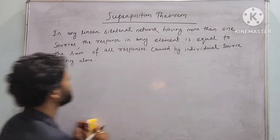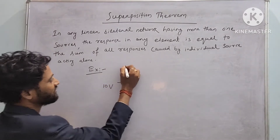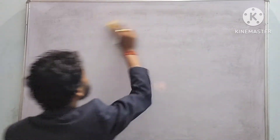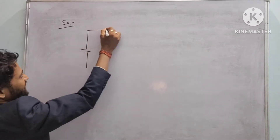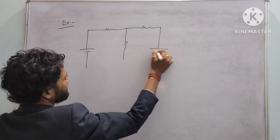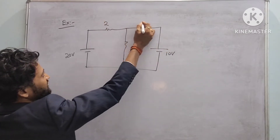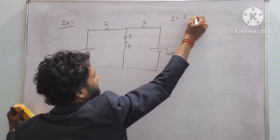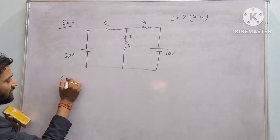We will solve a circuit. Let we have a circuit with two voltage sources: 20 volt and 10 volt, and resistances 2, 3, and 4 ohm. We have to find the current through the 4 ohm resistor. Case 1: we will activate 20 volt and deactivate 10 volt.